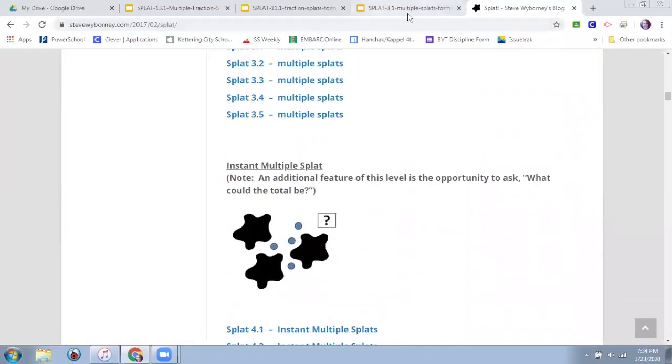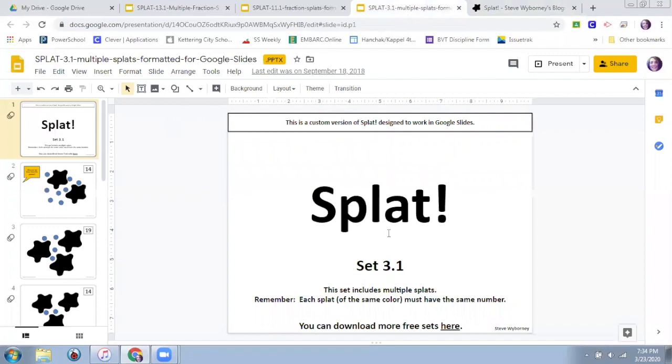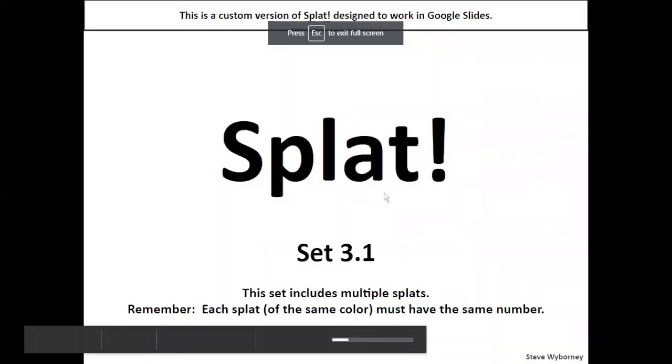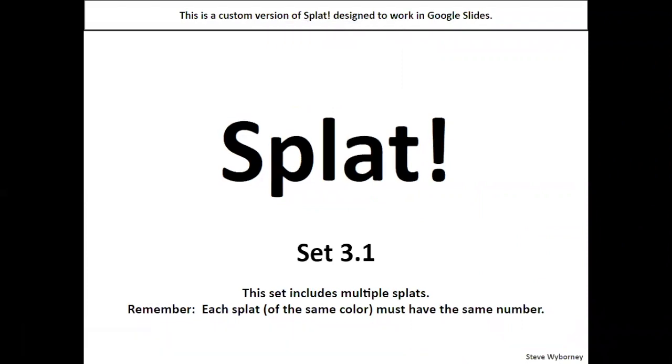All right. So this is level three. So my primary kiddos, my kindergarten, first and second grade are going to be doing levels one and two. Third grade, I would definitely start back at one and two to get them used to splat. And then I would come here to level three. So each splat of the same color has the same number. You can see it on that starting slide there. So how this works is starts with blank.